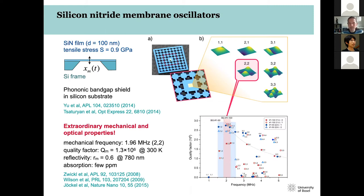This isolation gives the membrane very high-quality mechanical modes. We use the 2-2 mode, which has a mechanical frequency of about 2 MHz and a quality factor of about 2 million — meaning it rings 2 million times before decaying to 1/e of the initial amplitude. This is a very coherent, high-quality mechanical oscillator, with its frequency lying in the band gap of the surrounding structure.